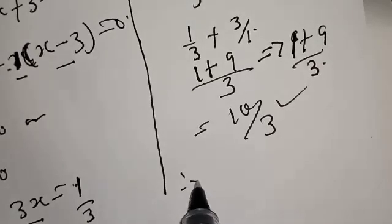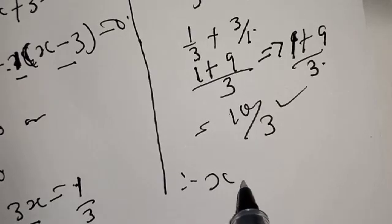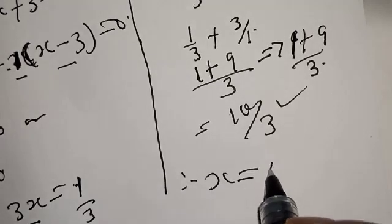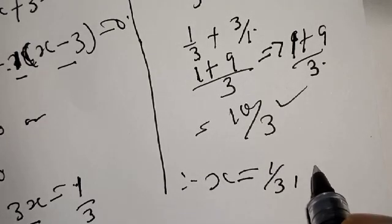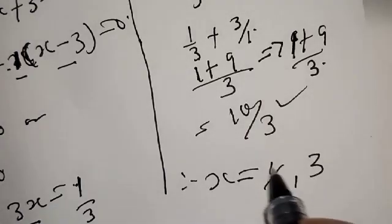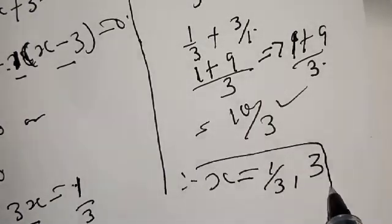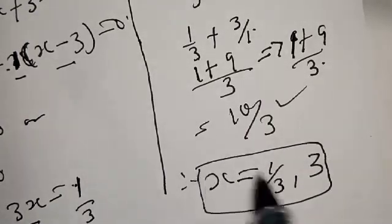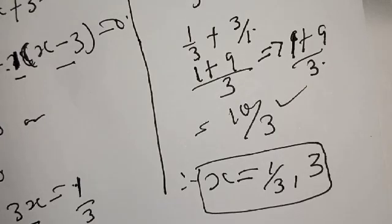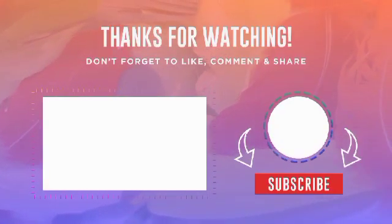Therefore the values of x are 1 over 3 and 3. Please don't forget to like, share, comment, and subscribe. Thank you.